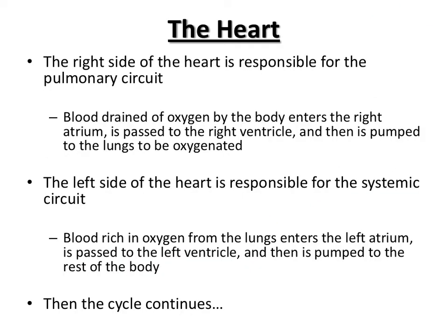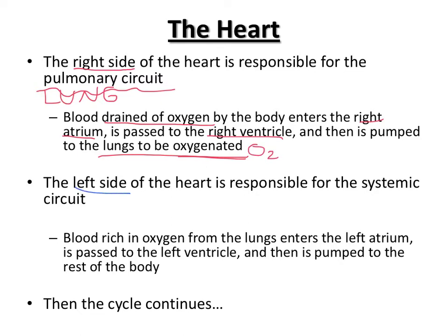The right side of your heart is responsible for what we call the pulmonary circuit — and pulmonary means lung. So the right side sends blood to your lungs. Blood that has returned to the heart, drained of oxygen, will need to be sent back to the lungs to pick up more oxygen. It enters the right atrium, passes to the right ventricle, and gets pumped to the lungs to pick up oxygen. The left side is responsible for the systemic circuit — it sends blood to the rest of your body. Blood rich in oxygen, returning from the lungs, enters the left atrium, passes to the left ventricle, and gets pumped to the rest of the body.